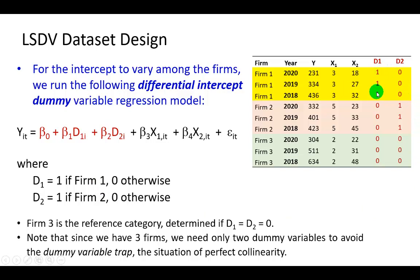And D2 will take on the value of 1, 0 otherwise, which you see right here in the pink patch. And so firm 3 in this example is the reference category, which is determined where D1 and D2 are both equal to 0. That's what you see here.